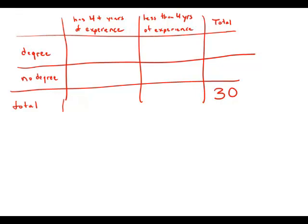So here we have a set of people and we're trying to fit them into two different categories: four years of experience or less, and degree or no degree. And in these cases, it often helps to draw a table like this.